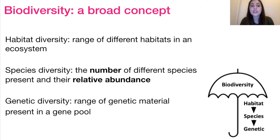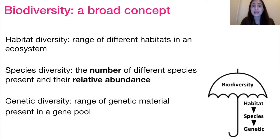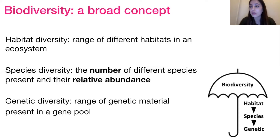Species diversity, contrary to popular belief, is not just the number of different species but also their relative abundance — their evenness. Species diversity leads to genetic diversity: the range of different genetic material present in a gene pool. That makes sense because the more different organisms you have, the more genes are going to be represented. So biodiversity actually describes a range of different things: the habitat, the species, and the genes.